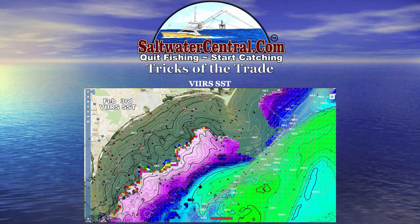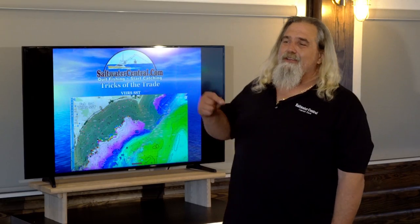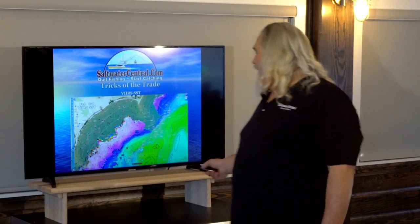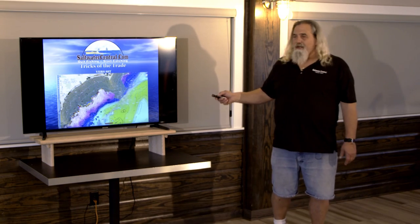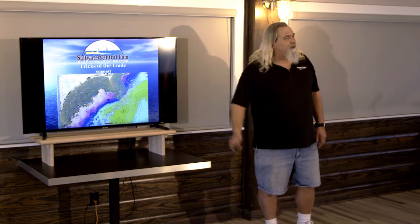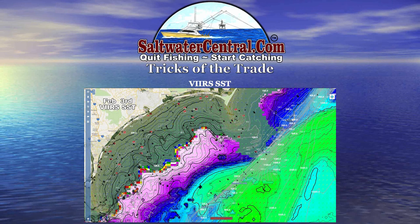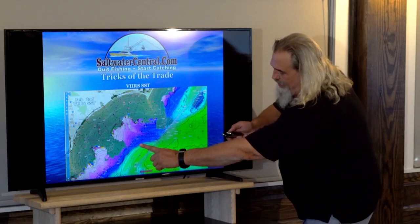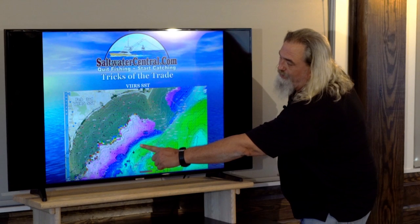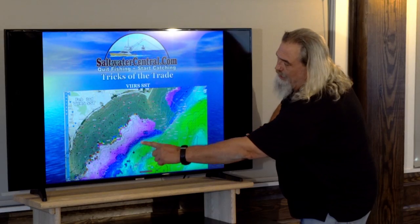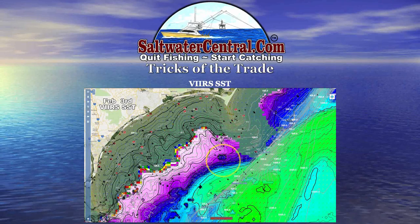If you went right to that edge today, guess what? It ain't going to be there. You've got to figure out where it's going to be tomorrow — and the way we do that is by backing up and going forward. If this is yesterday and that's today, where is it going to be tomorrow? This whole thing's pushing up to the north — so right here it is today, right there it is tomorrow. Tomorrow it's going to be about right there. Does that make sense?